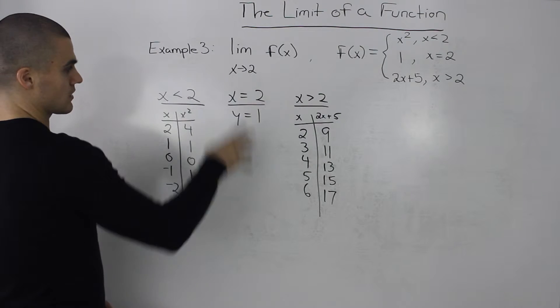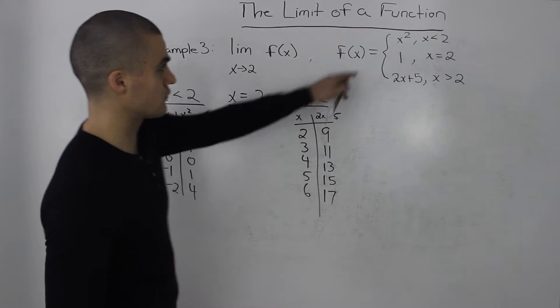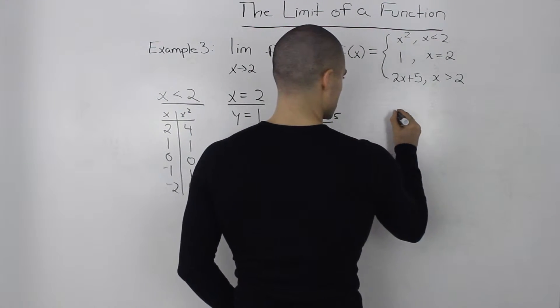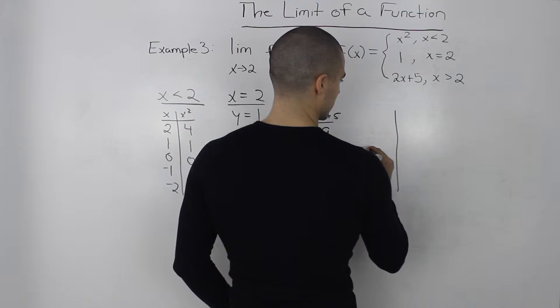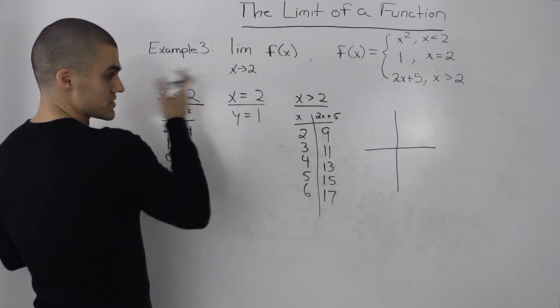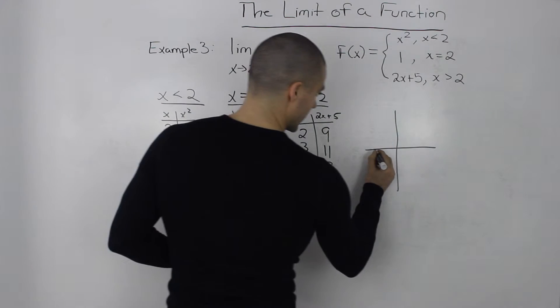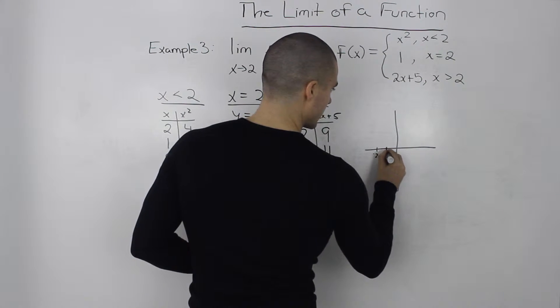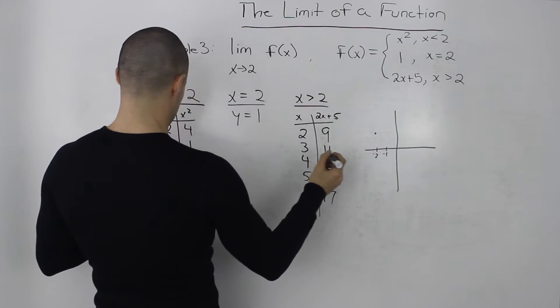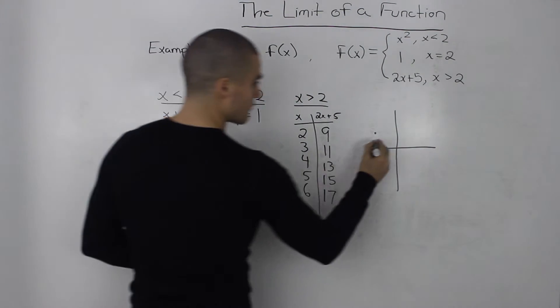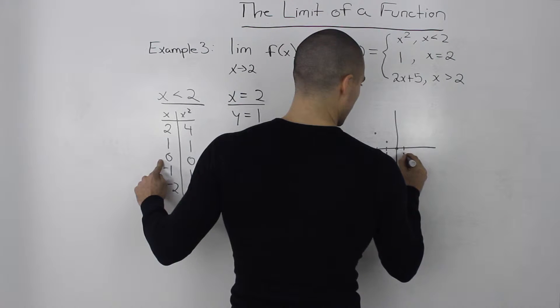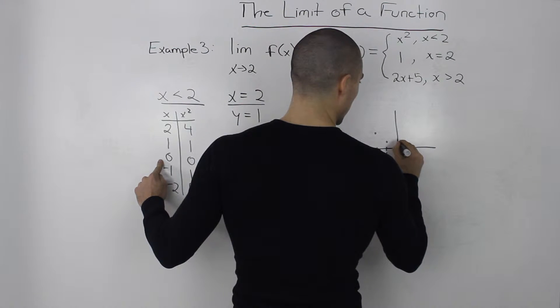Okay so we have three tables to work with for these three pieces of this function. So let's go ahead and graph these. So let's start off with the most left part of our table. So we'll have negative 2, negative 1. So at negative 2 we got a y value of 4. At an x value of negative 1 we have a y value of 1. Then at an x value of 0 we got a y value of 0.